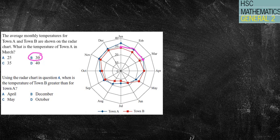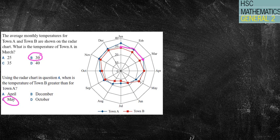When tracing you need to make sure you're going along the correct black line — it's very easy to slip up onto another line, so just be really careful. Next question: using this radar chart, when is the temperature of Town B greater than Town A? Looking across the months, Town B is less, less, less, equal, then greater — so the answer is May. Just double-checking the other months confirms it works out.